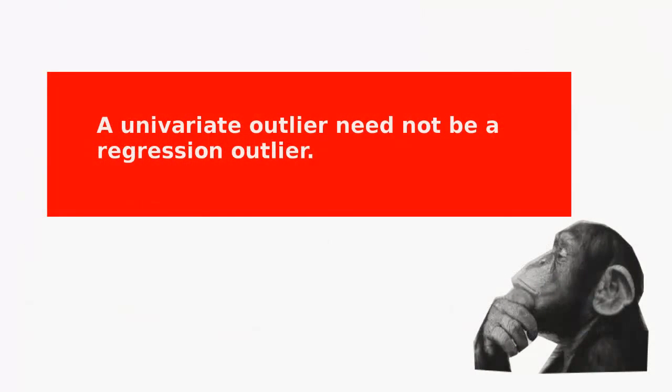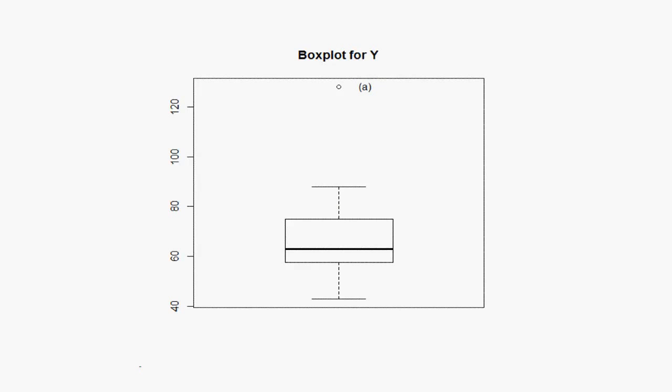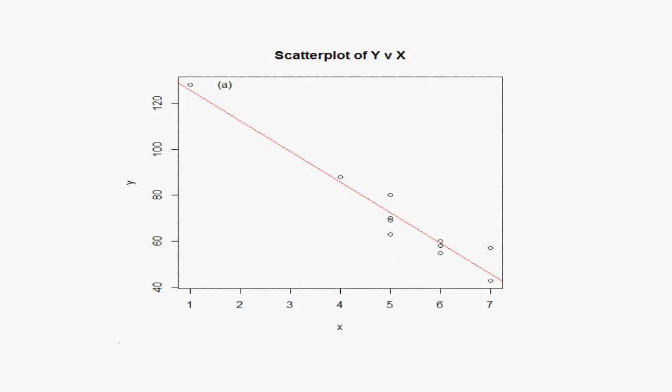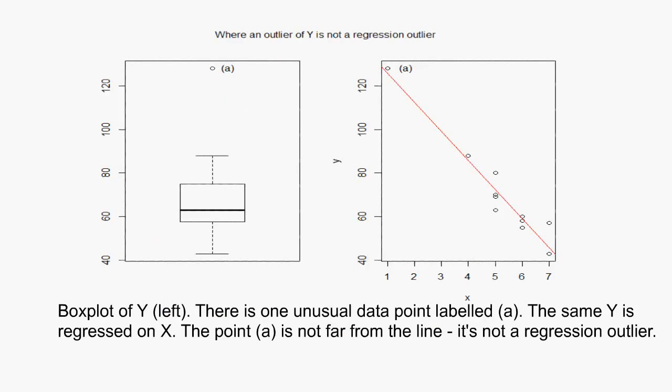Here is an example where a univariate outlier is not a regression outlier. Look at this box plot for y — there is a value labelled A that is far from the main mass of points, suggesting it is an outlier. Now here is a scatter plot of y versus x. The same point A is far from the others, but if we fit a line by regressing y on x, point A is not a regression outlier as it is not far above or below the line. If we had thrown out point A before the regression, we would have discarded relevant information. This example uses simple linear regression, but the same applies to multiple regression.